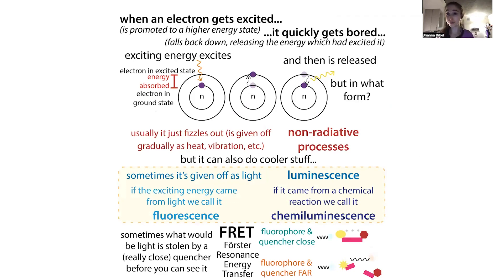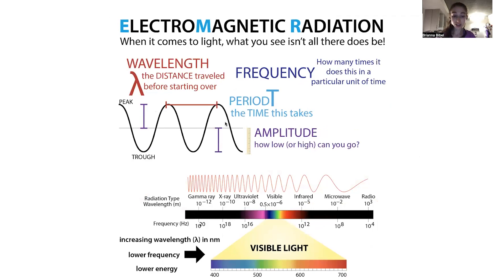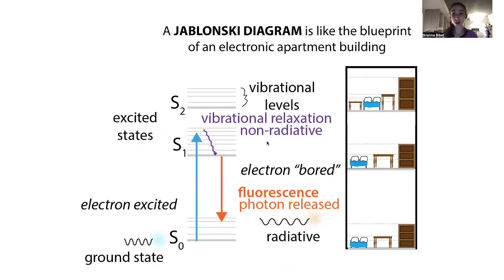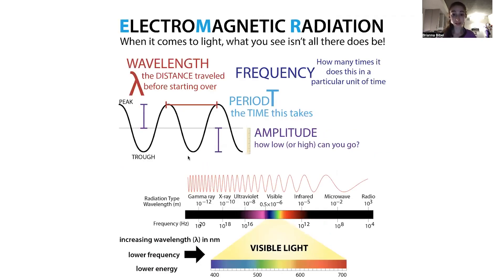Light is little packets of energy called photons that travel in waves. If an electron has the right atomic configuration, it can absorb this energy. The amount of energy in the light is directly related to how fast the light is oscillating — its frequency — and the wavelength, which is how close together the waves are.